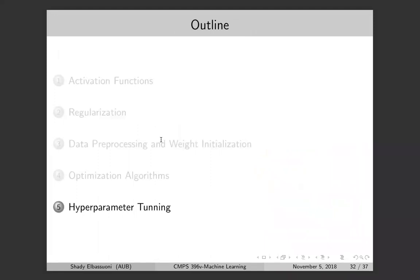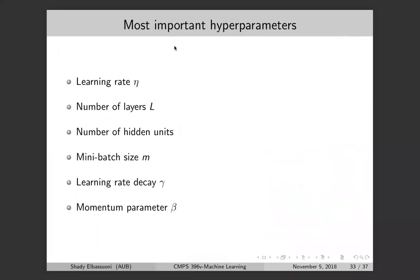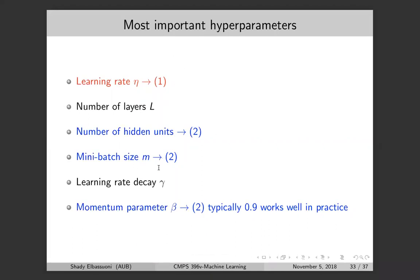The most important hyperparameters in a neural network are: the learning rate eta, number of hidden layers, number of hidden units per layer, mini-batch size m for mini-batch gradient descent, the learning rate decay gamma, and the momentum parameter beta if you're using gradient descent with momentum. The learning rate is the most important — it can really screw things up. Next comes number of hidden units, mini-batch size, and momentum.